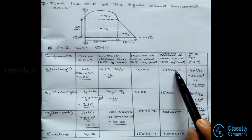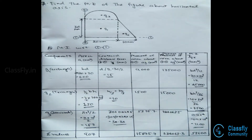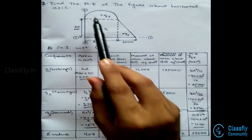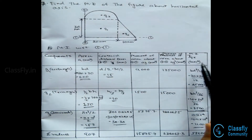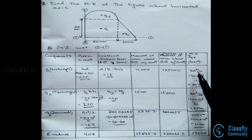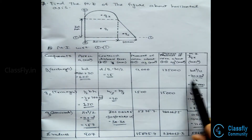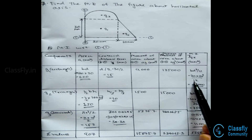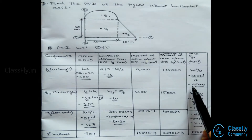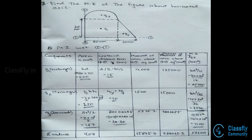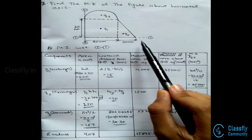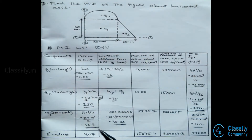The moment of inertia of the component Igx with respect to the 1-1 axis is given by bd³/12, that is 20×30³/12, which gives us 45000. Now coming to the second component, the triangle G2.